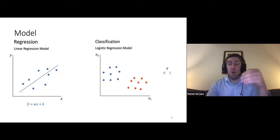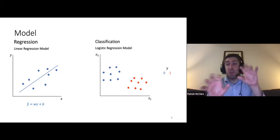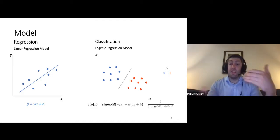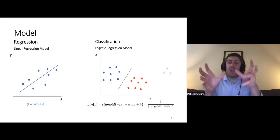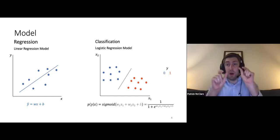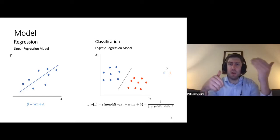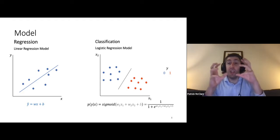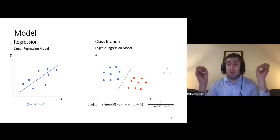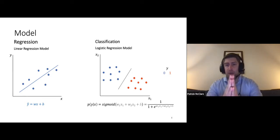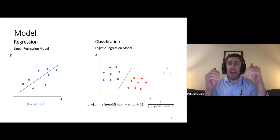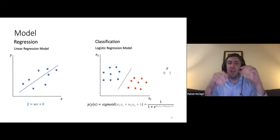Logistic regression works by having a linear part where you have a weight for each input dimension — a weight for x1, a weight for x2 — plus a bias. The output of that linear part is called the logit. That logit is then put through a sigmoid function, which is defined on the slides. What the sigmoid does is push the value of the logit to be between 0 and 1.